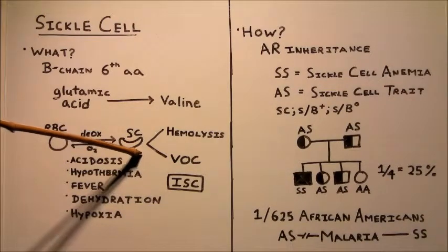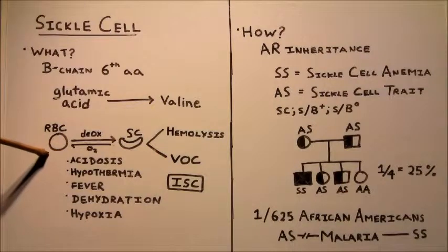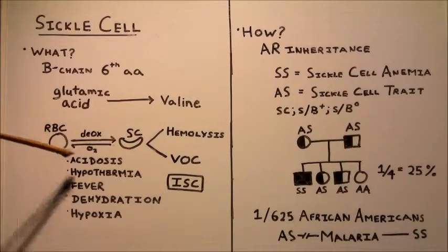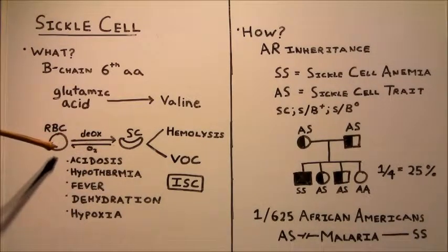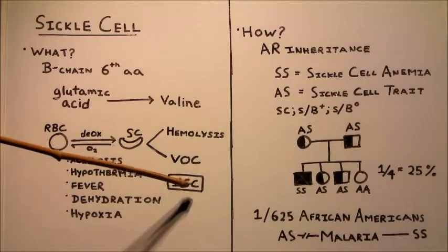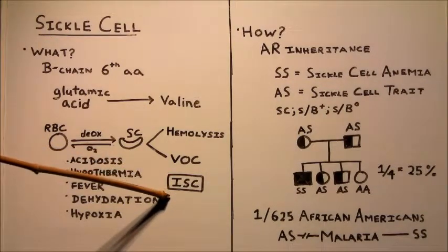Now, if the hemoglobin binds oxygen again, then the sickle cell can return to its normal shape. However, sometimes this transformation doesn't occur, and you end up with ISCs, or irreversible sickle cells.